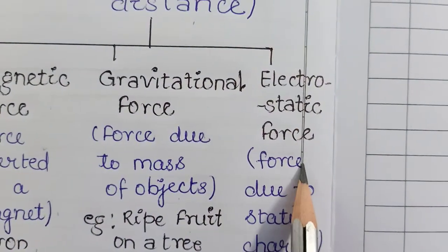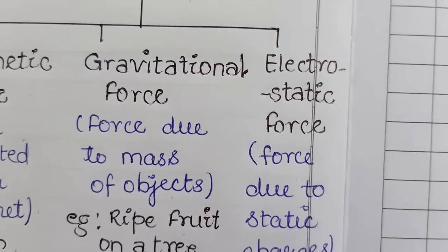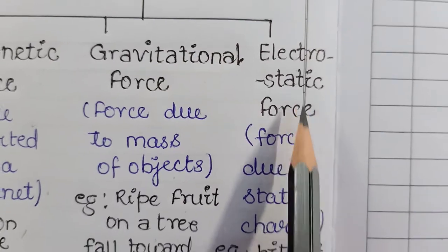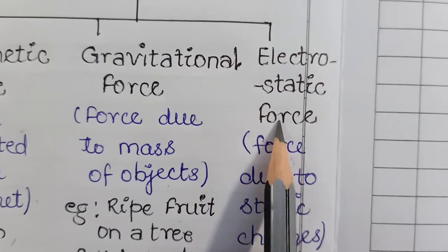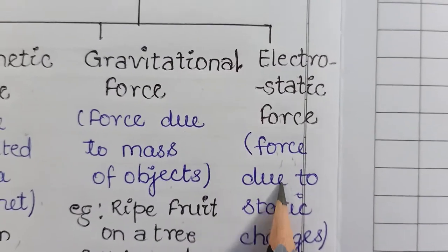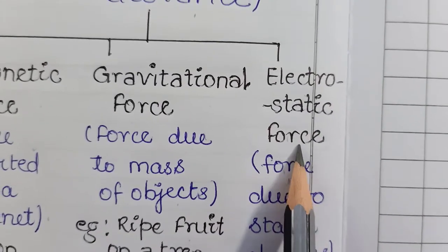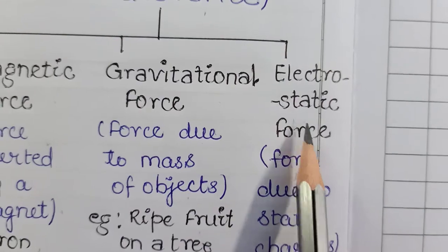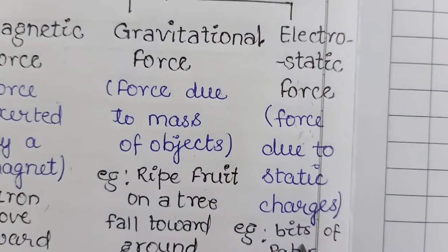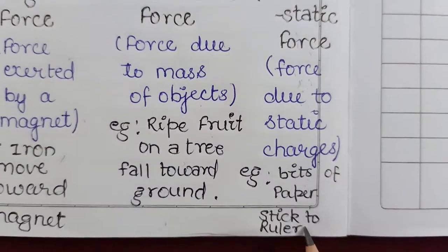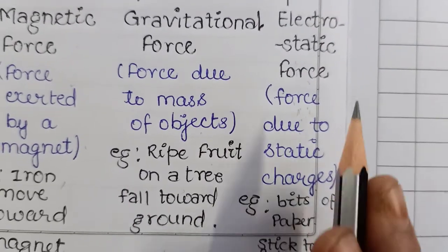The last one is electrostatic force. The type of force which is due to static charge is called electrostatic force. This type of force is created due to charge or the movement of electrons. An example of electrostatic force is bits of paper sticking to a ruler.